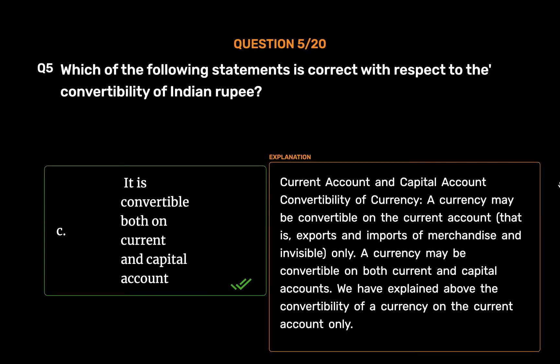Regarding current account and capital account convertibility of currency: a currency may be convertible on the current account, i.e., exports and imports of merchandise and invisibles, only. A currency may also be convertible on both current and capital accounts.